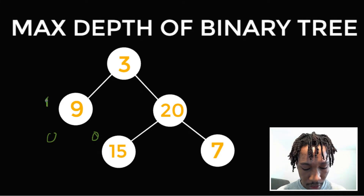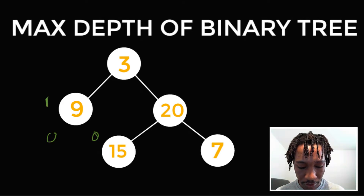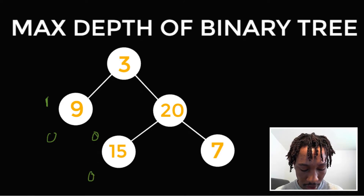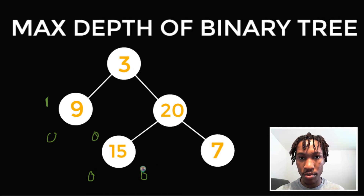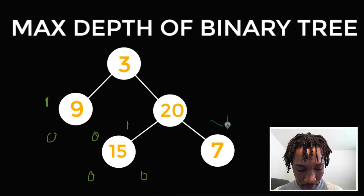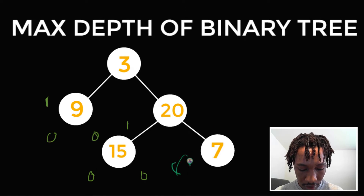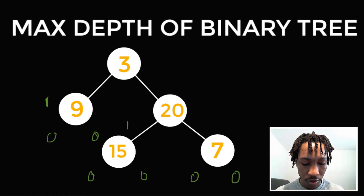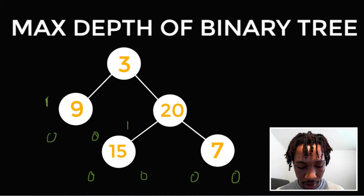Then we go to the right child path of three. It also goes to the left, which goes to the left and returns zero, and also goes to the right and returns zero. We take the maximum of those two plus one — that's one. Then we go to the right child path of 20. That goes to the left, returns zero. At the null node, we also go to the right, null node returns zero. We move back up to seven, take the maximum of its left and right children paths — zero plus one is one — so seven returns one.